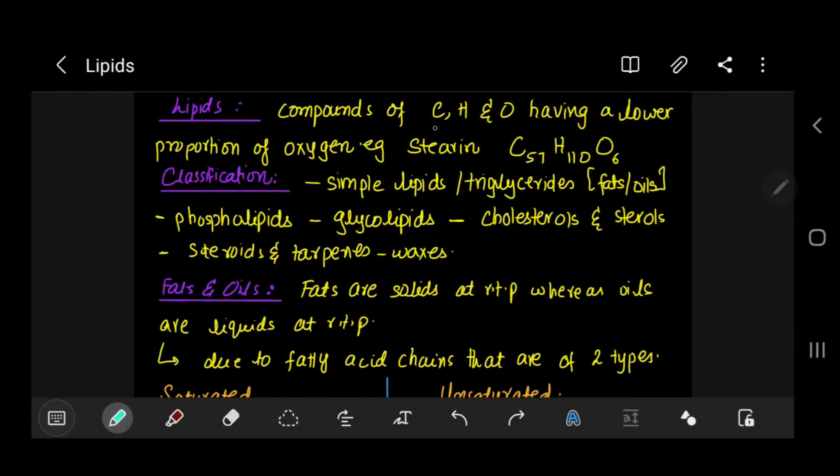Lipids are also part of biological molecules, so let's get started. Lipids are basically compounds of carbon, hydrogen, and oxygen. The unique thing is that they have a lower proportion of oxygen. We have sterin as an example, and here's the molecular formula for sterin. As you can see, we have quite a significant number of carbons and hydrogens, but the number of oxygens in comparison to these two is very less. That's how we identify lipids.